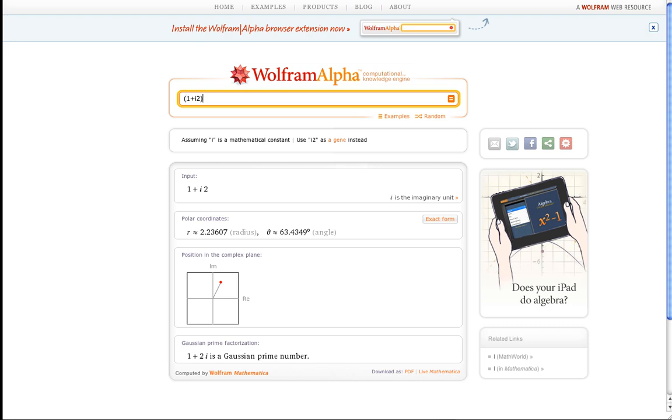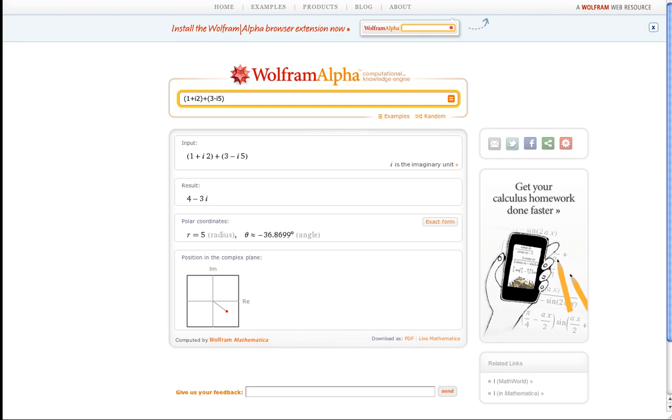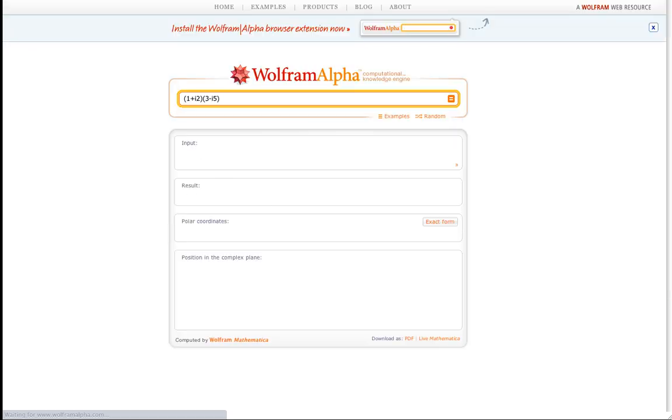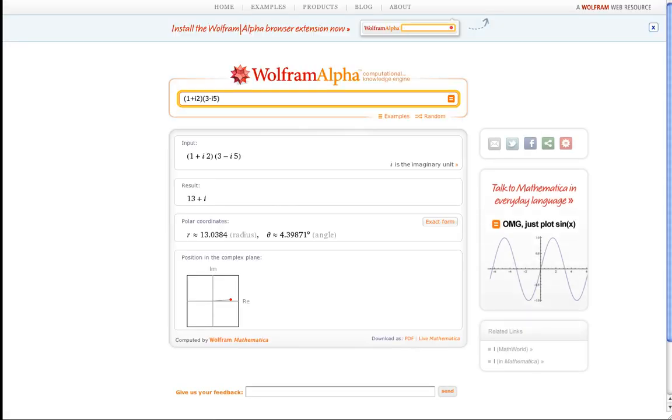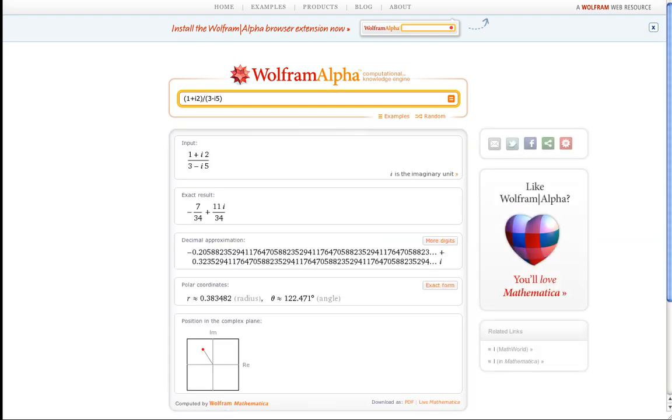So let's suppose we want to add 1 plus i2 to 3 minus i5. So I'm going to add 2 complex numbers. Again, it tells me what it thinks I've input. It gives me the result. It gives me the polar coordinates and plots it in the complex plane. And I can do this as well for multiplication and division. And it gives me some really crazy decimal approximation. That's another one of the beauties of Wolfram Alpha. Sometimes it gives you answers that are mathematically correct but not particularly what you would expect.